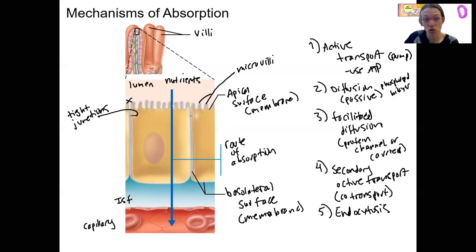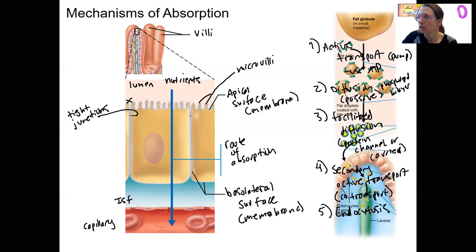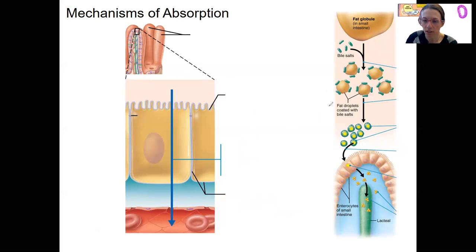So depending on what that nutrient is, it's going to use different processes. So for example, you already know lipids are able to diffuse through the plasma membrane. This means they are using what process here? Passive diffusion. Not facilitated diffusion. Because they don't need a protein to carry them through. They can diffuse right across that phospholipid bilayer.